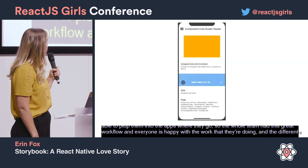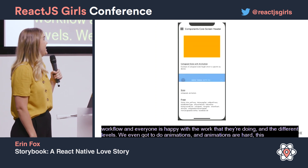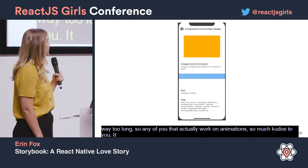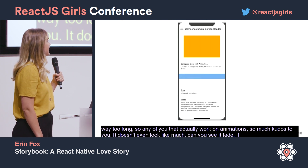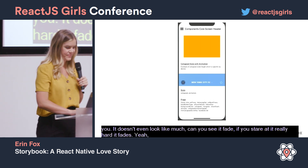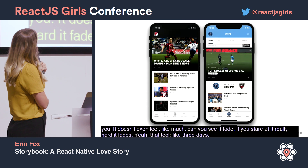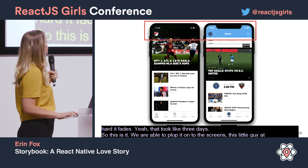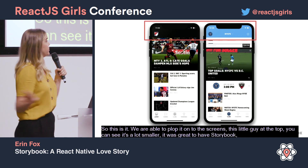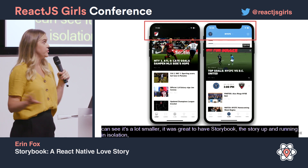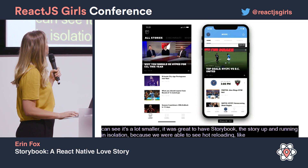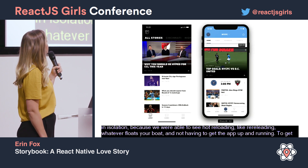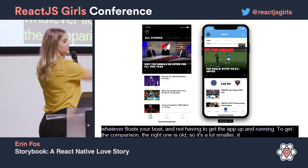We even got to do animations, and animations are hard — this one took me way too long. Kudos to anyone who works on animations. It doesn't even look like much — if you stare at it really hard it fades — but that took about three days. We were able to plop it onto the screens. The little header at the top is now a lot smaller. It was great to have the story running in isolation because we could see hot reloading and live reloading without having to get the entire app up and running. The component is a lot smaller now, still has tabs depending on the screen you're on, and the bottom nav is much better too — also done in Storybook.